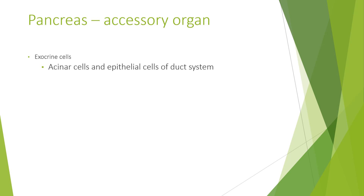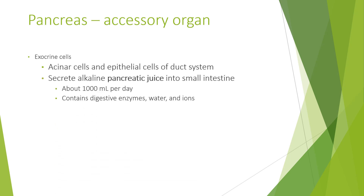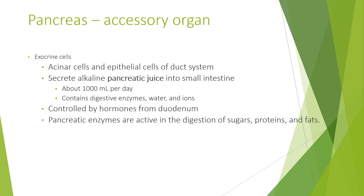Exocrine cells — these are acinar cells and peripheral cells in the duct system — secrete alkaline pancreatic juice into the small intestine, about 1000 millilitres per day, and these contain digestive enzymes, water, and ions. These are controlled by hormones from the duodenum. Pancreatic enzymes are active in the digestion of sugars, proteins, and fats.